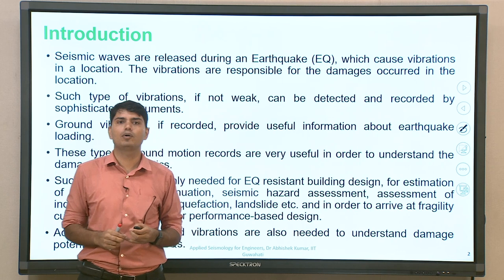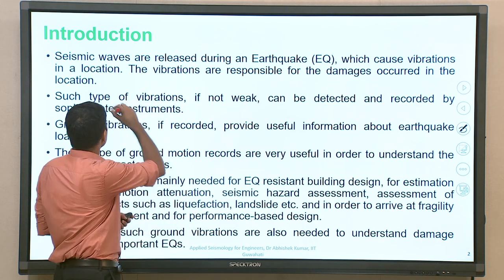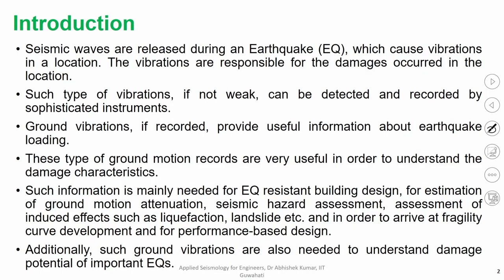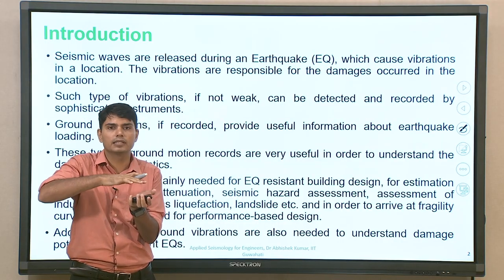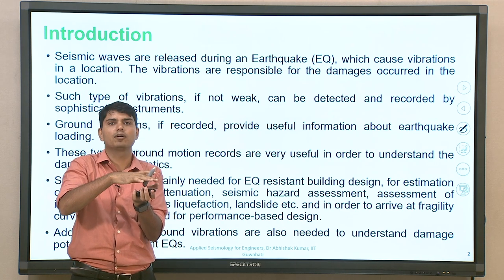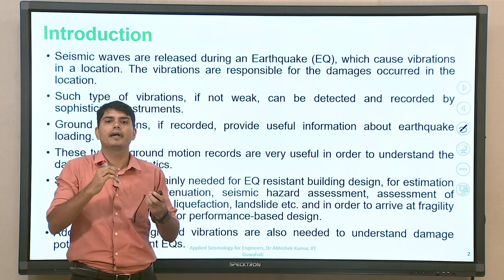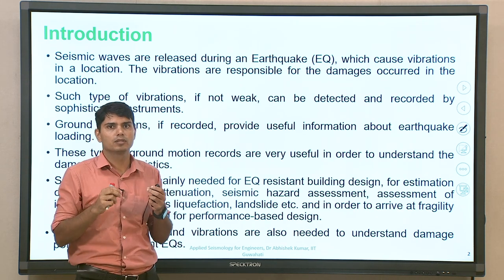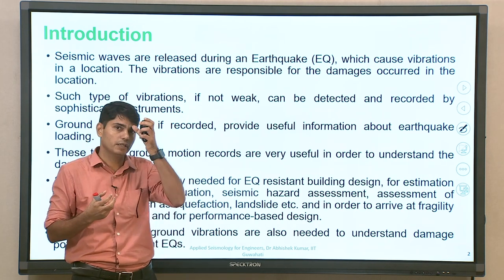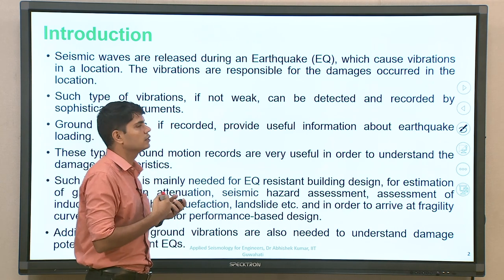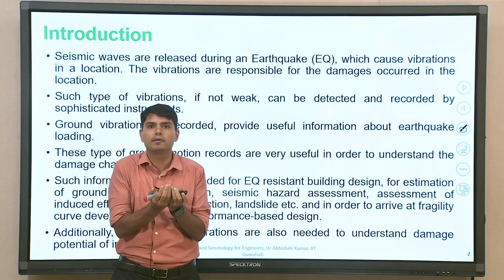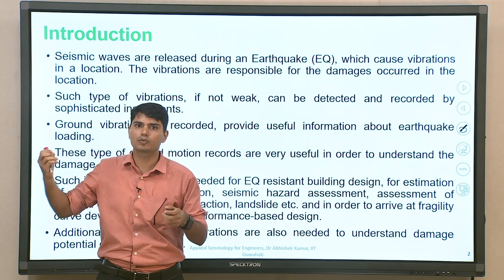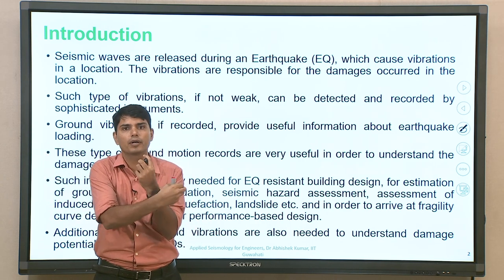When discussing about ground motion prediction, our understanding starts with seismic waves released during a particular earthquake. If you put a recording station, it will sense how much vibration is happening at a particular site and how this variation in amplitude is happening with respect to time. This is basically the signature of ground vibration or ground motion. Whenever we say any ground motion record is available, we know how ground acceleration, velocity, or displacement was changing with time when earthquake-generated seismic waves passed through your recording station.